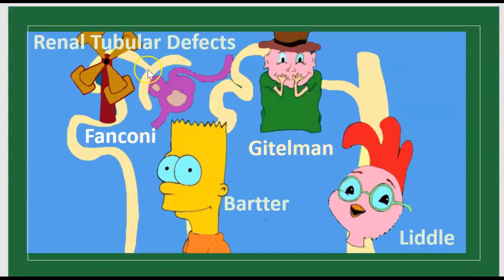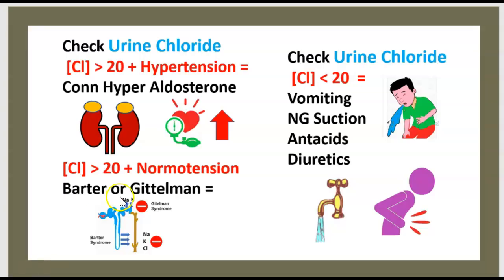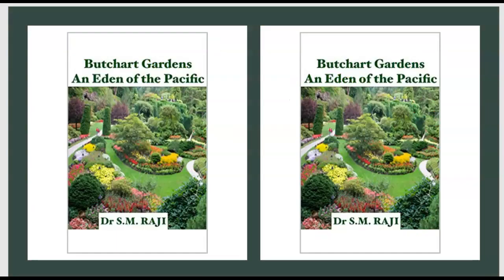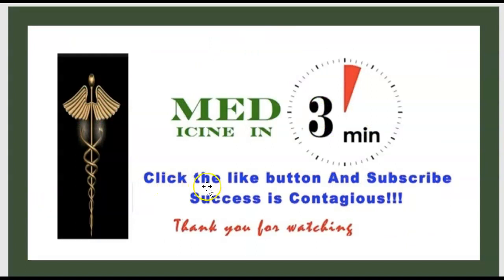Renal tubular defects include Bartter, Liddle, and Gitelman syndromes causing metabolic alkalosis, and Fanconi syndrome causing metabolic acidosis. To summarize metabolic alkalosis: check urine chloride. If over 20 with hypertension, think Conn syndrome. If over 20 with normal blood pressure, think Bartter or Gitelman. If less than 20, think vomiting, antacids, or diuretics. Thank you for watching this episode of Medicine in 3 Minutes — please like, subscribe, and leave your comments.